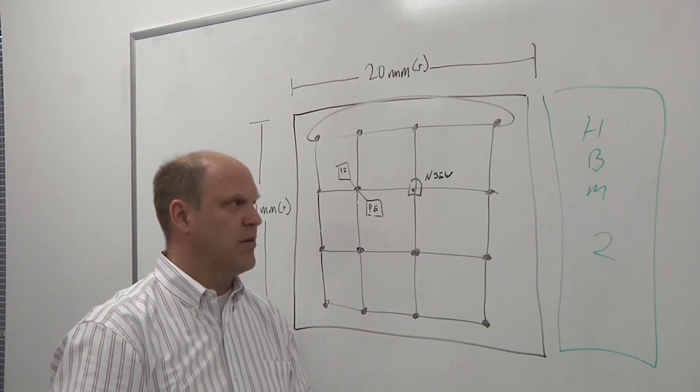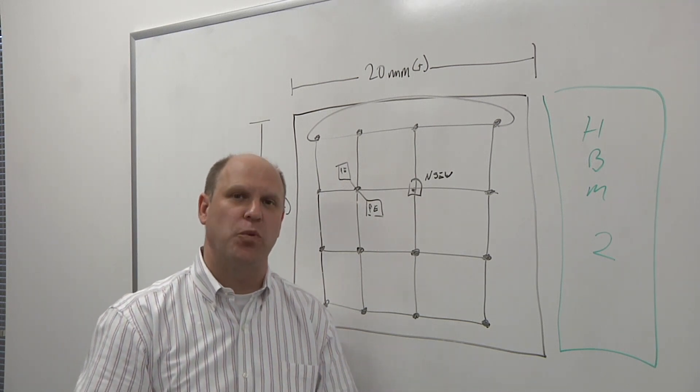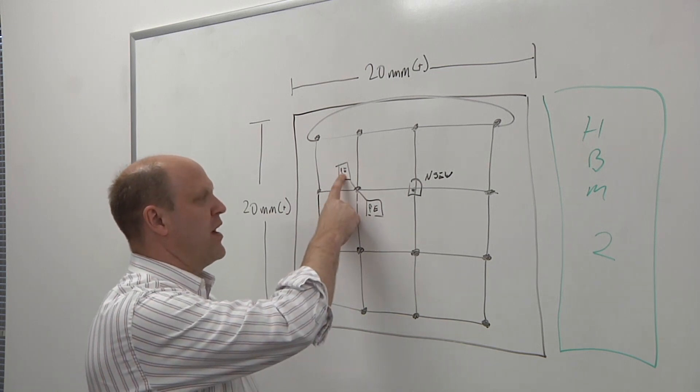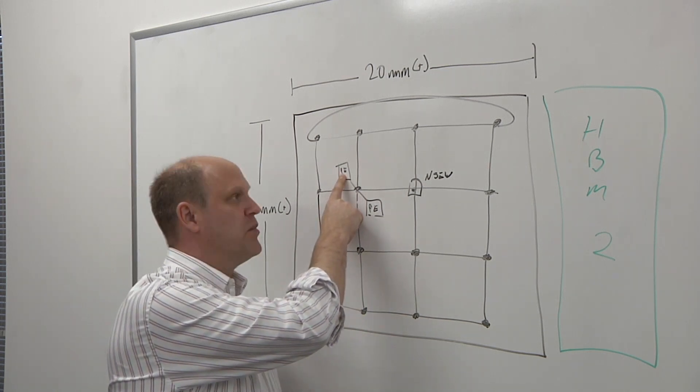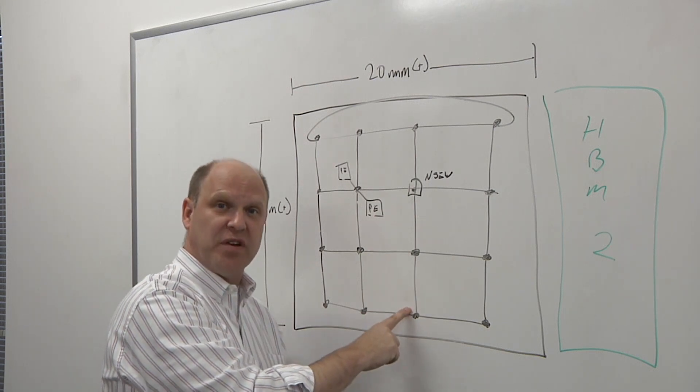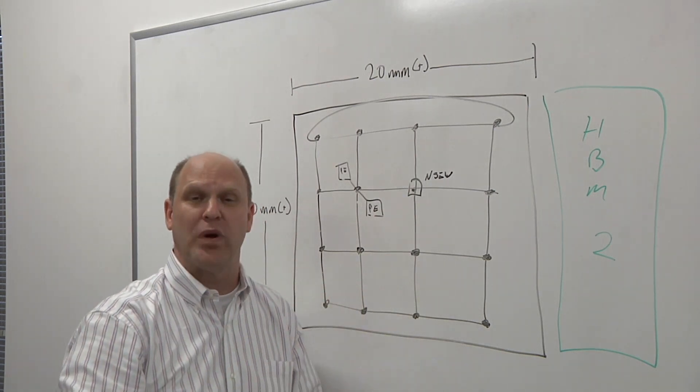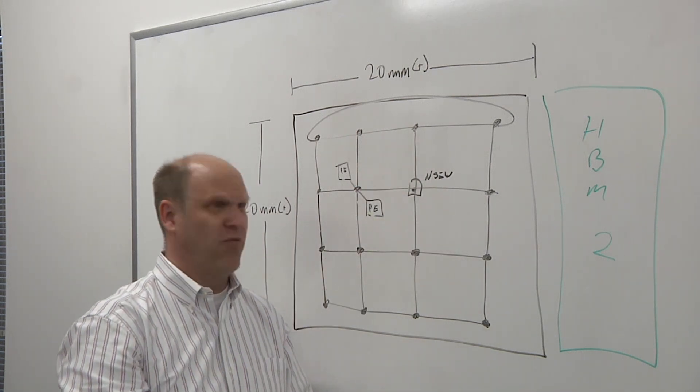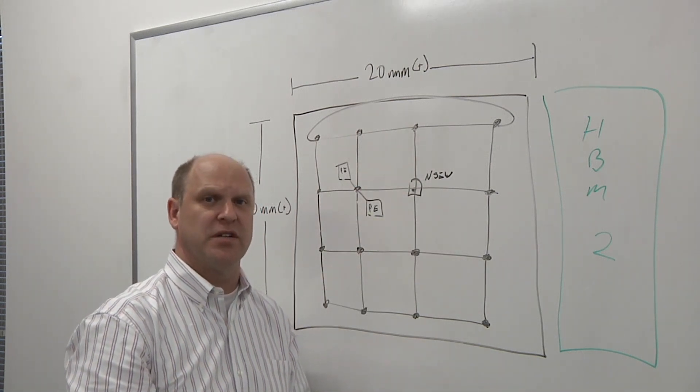That is where the network-on-chip interconnect can really help because what you want to be able to do for maximum efficiency, for example, if you've calculated something here in this processing element and then you want to send it to a whole bunch of other processing elements. Let's say it's a new calculation of weights and you want to send it to four different processing elements or 40 different processing elements all at the same time.